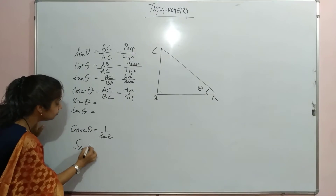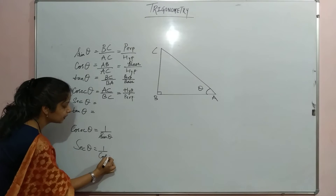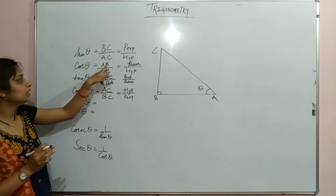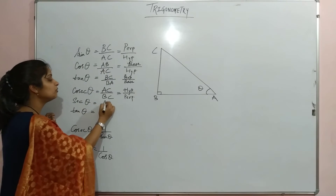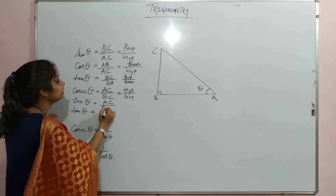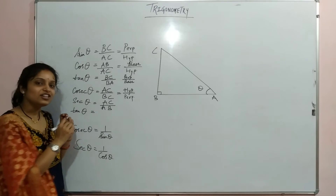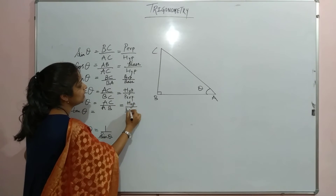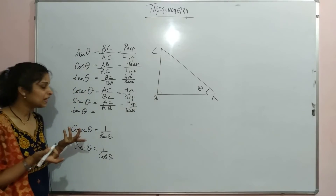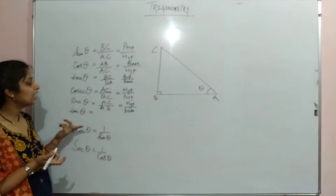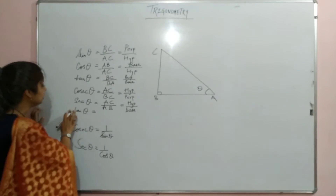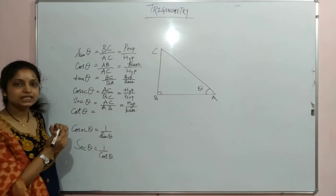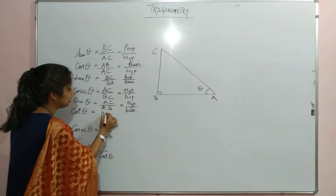Sec is the reciprocal of cosine. Since cosine is AB upon AC, sec is AC upon AB, which can also be written as hypotenuse upon base. Last is cot — cot is the reciprocal of tan, so it is BA upon BC, or base upon perpendicular.